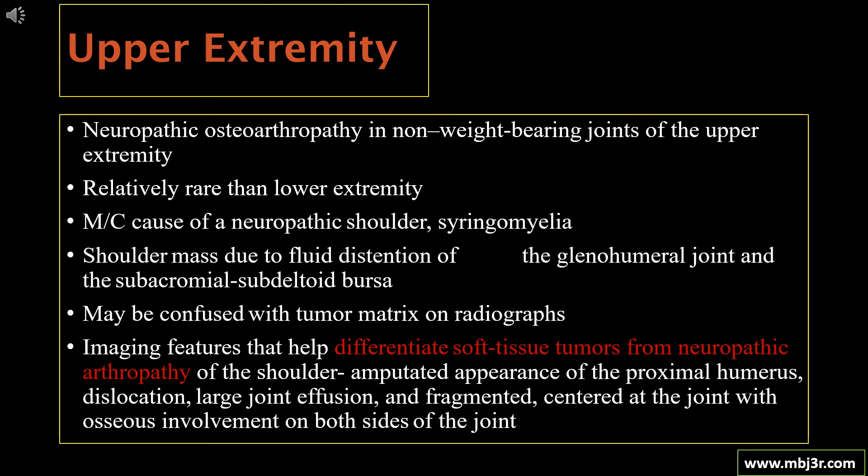Imaging features that help differentiate soft tissue tumors from neuropathic arthropathy of the shoulder include an amputated appearance of the proximal humerus, dislocation or subluxation, large joint effusion, fragmentation centered at the joint with osseous involvement on both sides of the joint. In a tumor, involvement is usually on one side only.